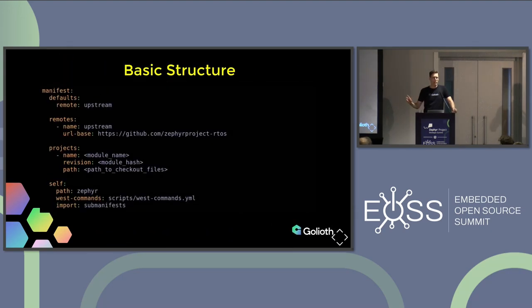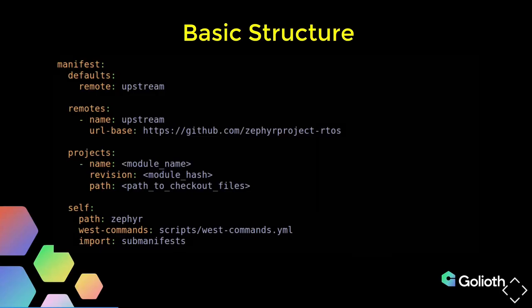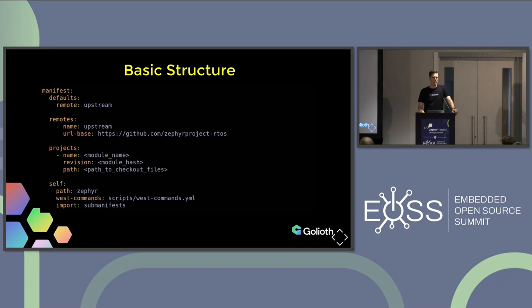At the end of the manifest, you have a self-entry that tells West: for the code in this manifest, do these special things. It sets the path, which gets applied to the URL base and goes and gets that repository. This self-entry has a couple of special commands — it says grab this West commands file and import this extra directory of manifest. Don't worry if you don't understand this right now; we're going to go over the project-level stuff line by line.